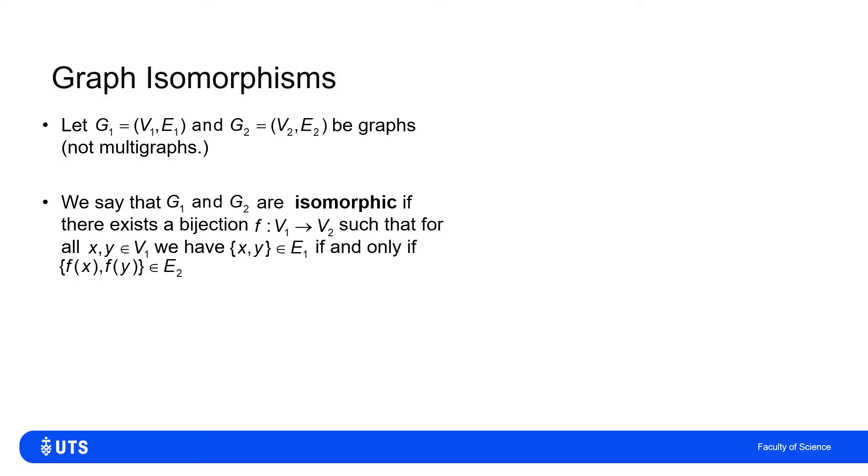So just linguistically, isomorphic, iso meaning same or equal, morph meaning shape, so the same sort of shape.